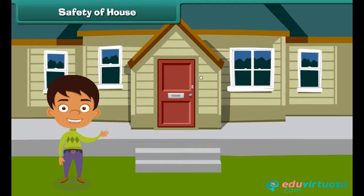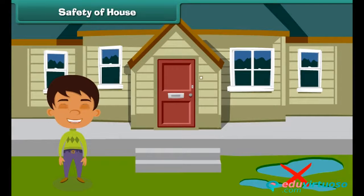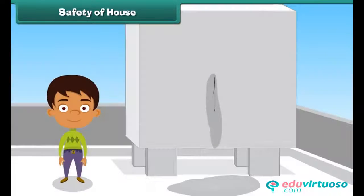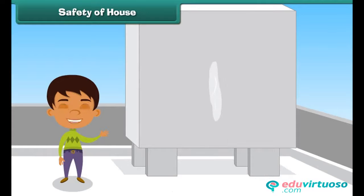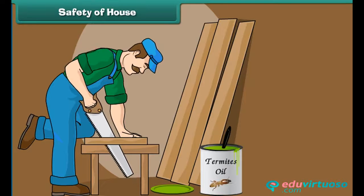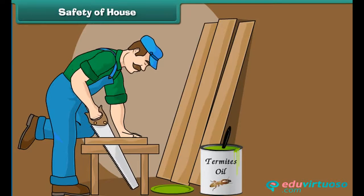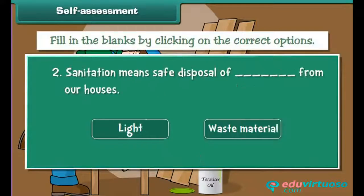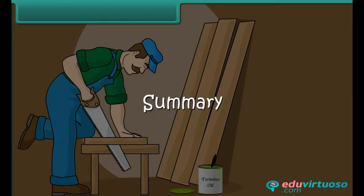The safety of a house is very important. Dirty water should not be allowed to collect near a house, as it damages the house. Leakages in overhead tanks should be fixed. The woodwork of a house must be protected from termites.